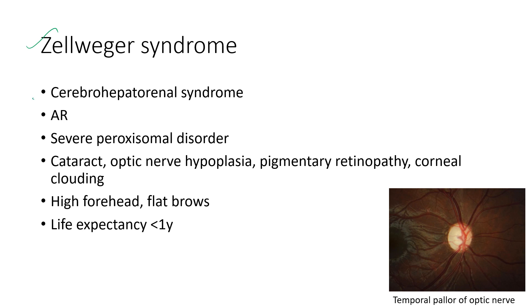Next is Zellweger syndrome, also known as cerebrohepatorenal syndrome. It is an autosomal recessive condition and a form of severe peroxisomal disorder. The ocular features include cataract, optic nerve hypoplasia, pigmentary retinopathy, and corneal clouding. A picture shows temporal pallor of the optic nerve. The systemic features include high forehead, flat eyebrows, and a life expectancy of less than one year.